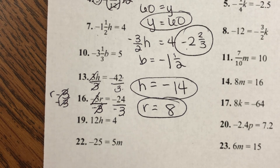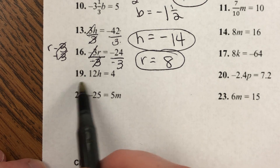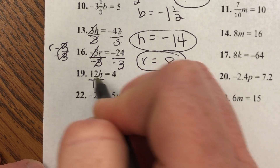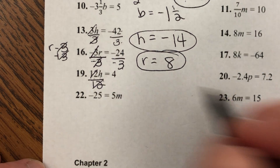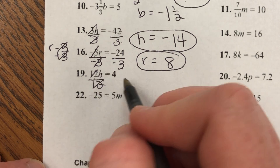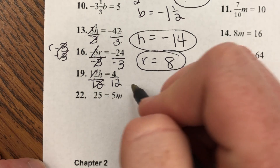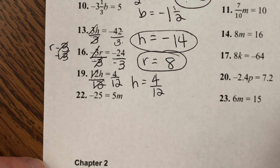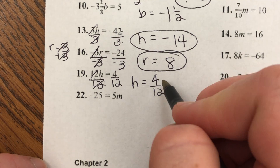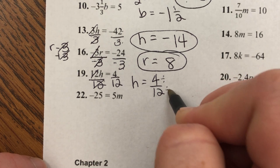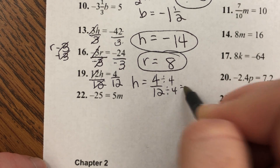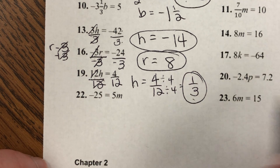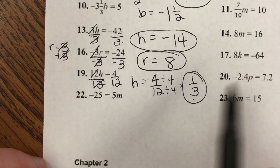Number 19: H being multiplied by 12. To get rid of times 12, divide by 12 on both sides — they cancel. I'm left with H equals 4 divided by 12. Simplify by dividing top and bottom by 4, and I get one third. H equals one third, and everything's positive so the answer is positive.